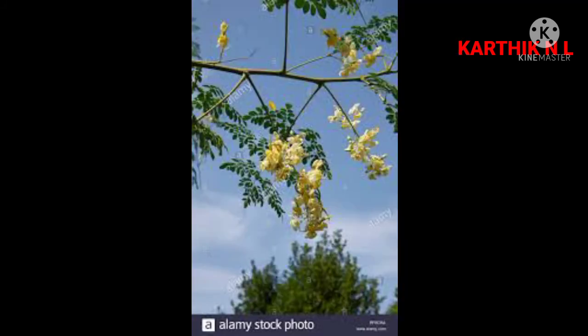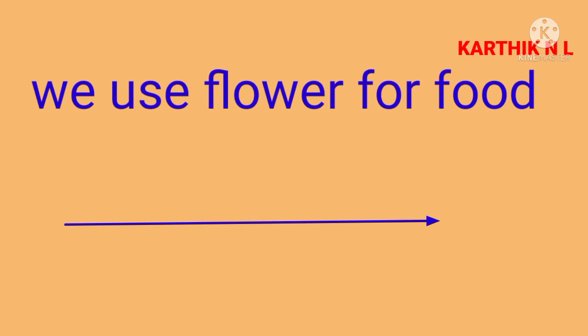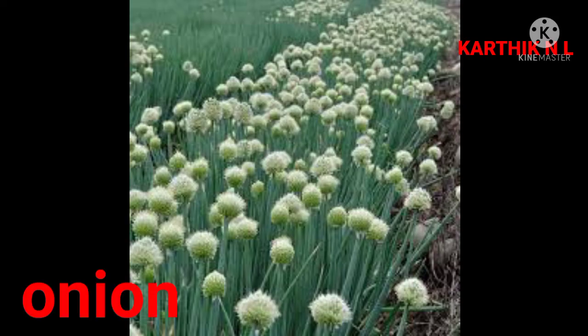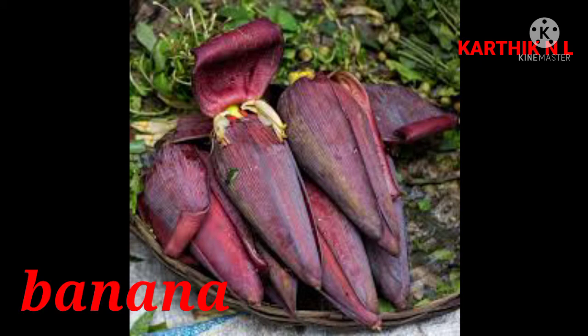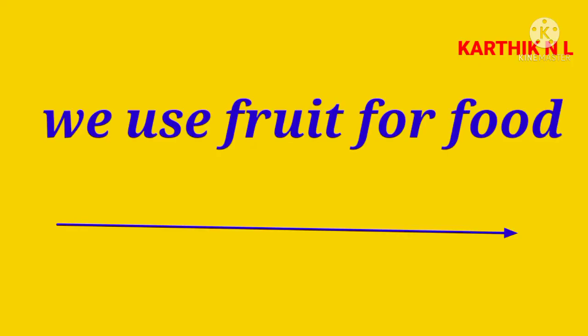Children, we use flowers for food — plants' flowers for food. Which are they? For example, onion flower, moringa flower, and banana flower, etc. And not only flower — we use fruit for food.